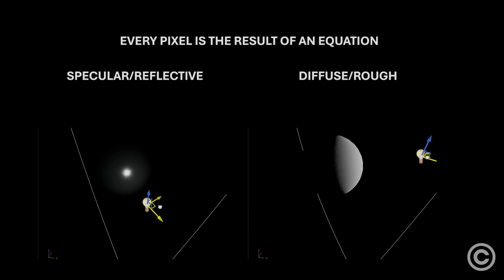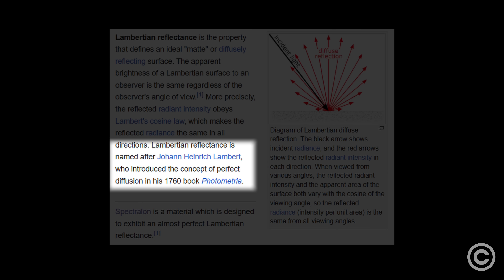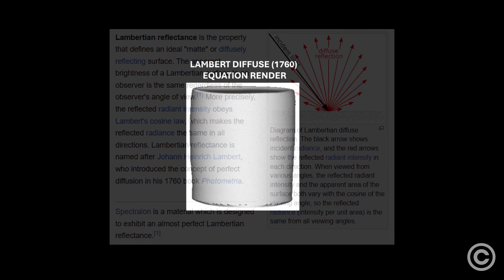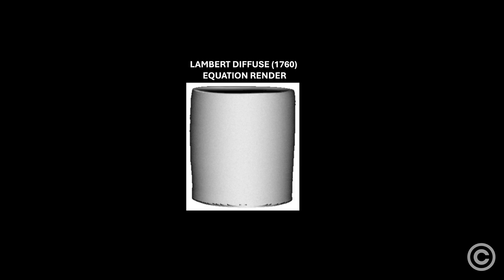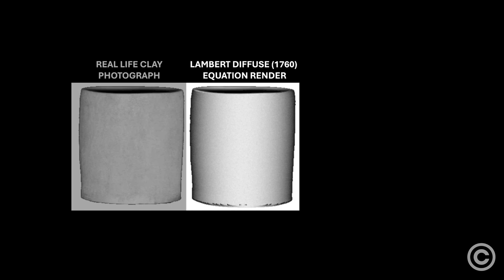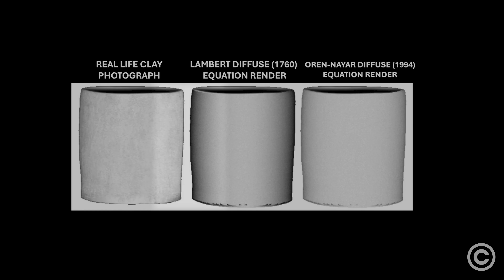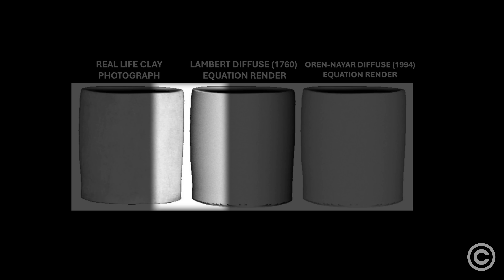For years, graphics have been using a 264-year-old diffuse equation called Lambert. In 1994, the inaccuracies with Lambert were made very apparent when compared to a photographic reference meant to show off the improvements of a new diffuse model called Oren-Nayar. This clay example does a pretty good job showing how quickly Lambert begins to deviate from realistic behavior.